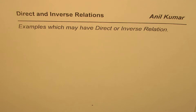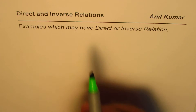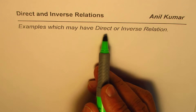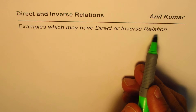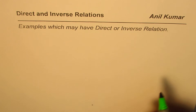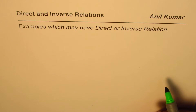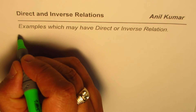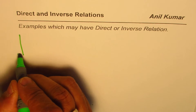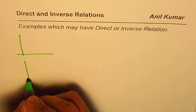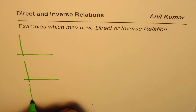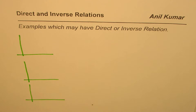I'm Alil Kumar and in this video we'll have a few examples where you need to identify whether these examples are for direct relation, inverse relation, or neither. Some of them could be neither also. What I will do here is first sketch a few graphs, and from those graphs you have to figure out whether these are examples of direct variation, inverse variation, or neither.